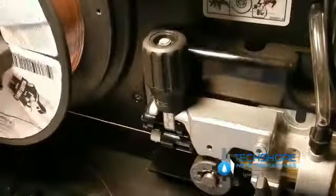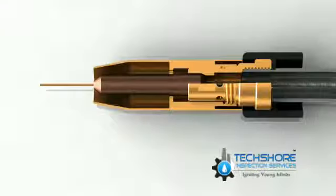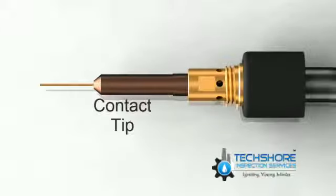Here's the MIG wire going through the wire feeder into a flexible tube or conduit liner. The liner goes through the hose or welding lead all the way to the torch nozzle. At the nozzle, the wire is fed through a contact tip and comes out at the point of the weld.